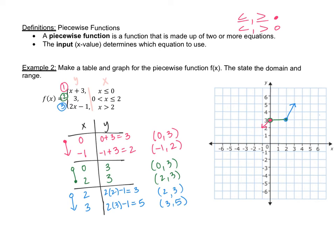Now we have our graph. We've made the table, done the graph, and we need to state the domain and range. Domain refers to the x values. Looking at the graph, it's pointing down but also pointing to the right with an arrow, so it keeps extending forever. The x values go from negative infinity to positive infinity — all real numbers — and I don't see any open circle without a matching closed circle, so this is a continuous graph with no holes.